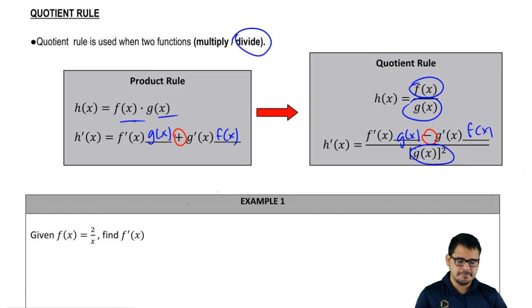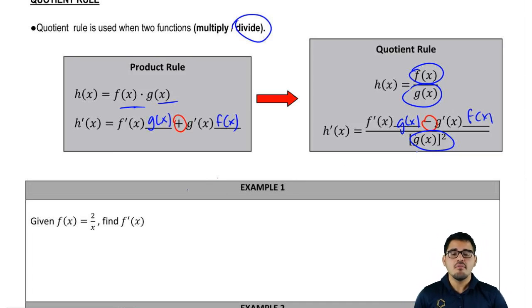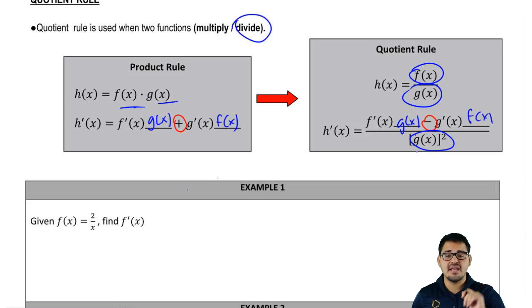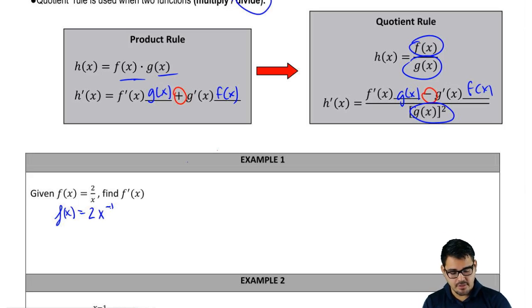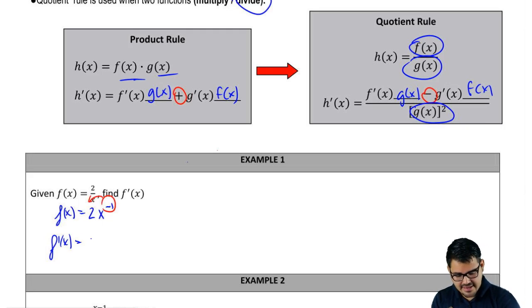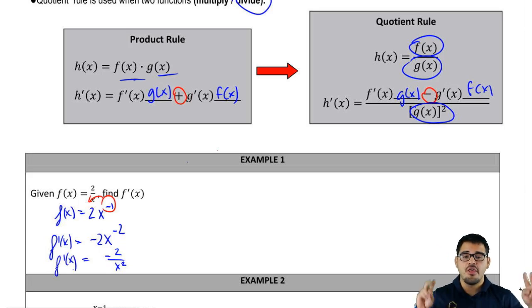Now let's apply an example. In example one, f(x) = 2/x — a very basic example. You could solve this a different way using the power rule, but we're going to solve it both ways. Starting with the power rule: we bring the x up to get 2x^(-1), then bring down the negative 1 to get -2x^(-2), which gives us -2/x².